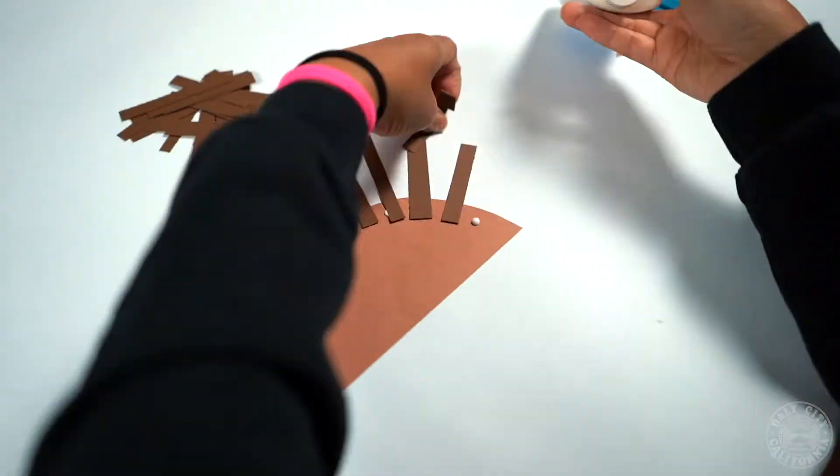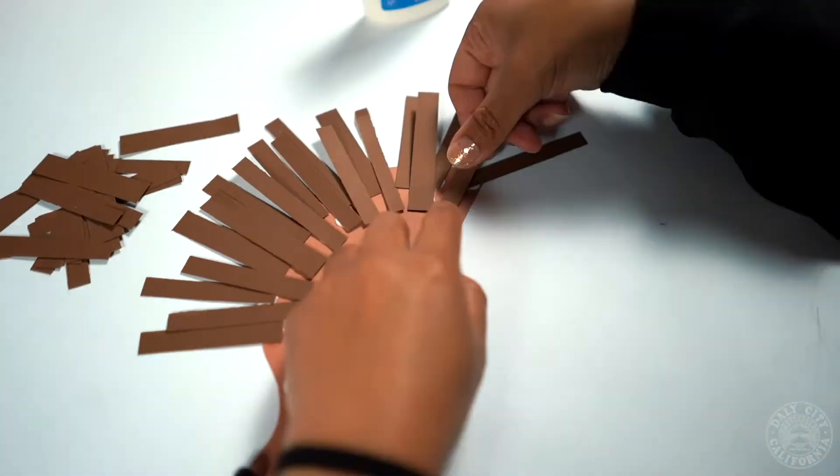Next, you're going to take the dark brown strips and glue them along the spine of the body.